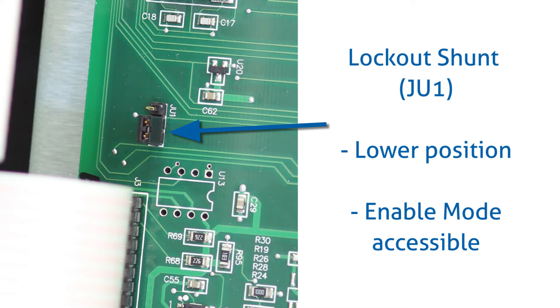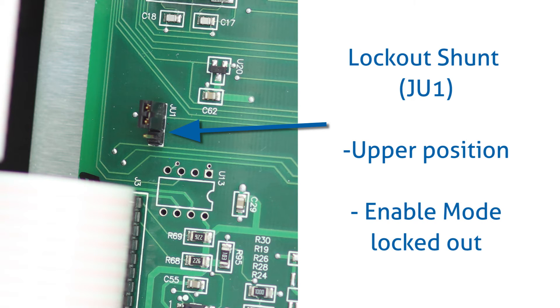When the shunt is in the lower position, the enable mode is accessible. When the shunt is in the upper position, the enable mode is locked out.